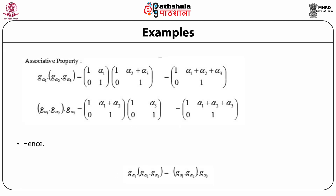The associative property can also be verified by considering g(α₁) multiplied by the product g(α₂)·g(α₃). The identity matrix g(I) is [1, 0; 0, 1], since the identity matrix multiplied by any matrix g(α) equals g(α) whether multiplied from the left or the right. The inverse of the matrix g(α) = [1, α; 0, 1] is [1, −α; 0, 1], and the product g(−α)·g(α) equals the identity matrix [1, 0; 0, 1]. Hence the inverse exists.